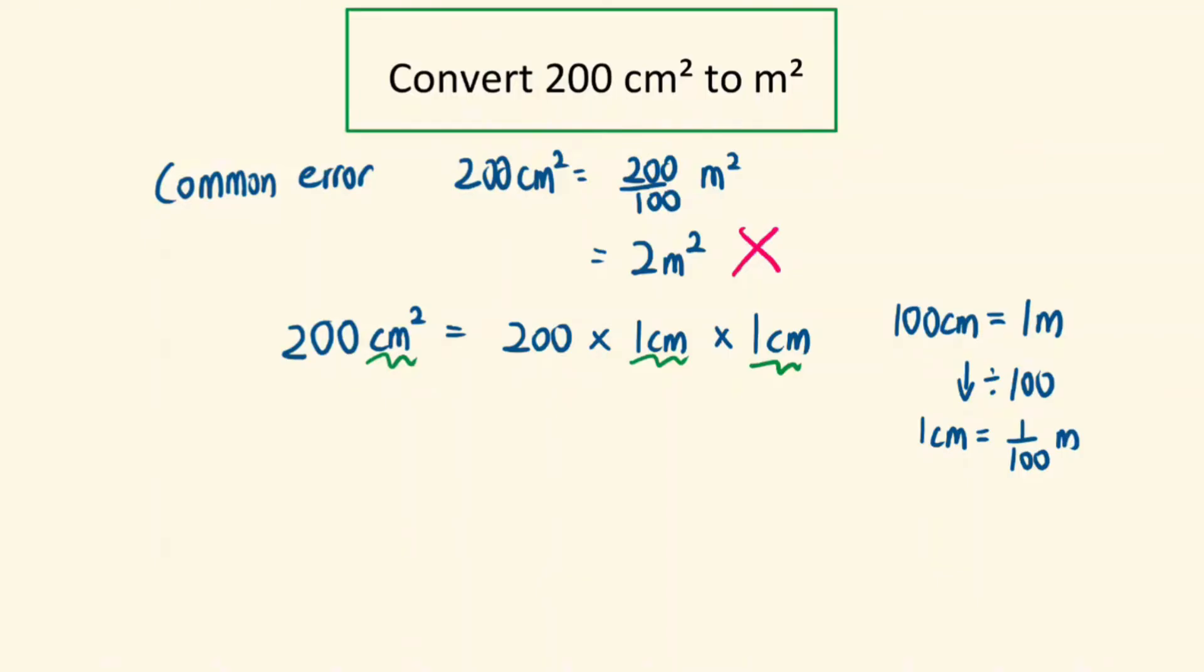So now we're going to replace each of the 1cm by 1 over 100 m. Then next, the meters here and the meters here will become our m². And then we're going to use the calculator to evaluate 200 times 1 over 100 times 1 over 100, and we should get 0.02.